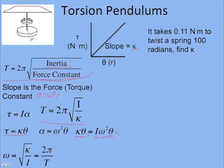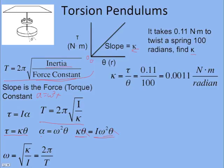Those are two different ways of deriving the period equation. If you practice both, you'll be competent at deriving these equations, which you may be asked to do. Now let's look at a problem similar to the WebAssign: it takes 0.11 newton-meters to twist the spring 100 radians — find kappa. Kappa is the slope of the torque-angle line: torque divided by displacement, giving 0.0011 newton-meters per radian.